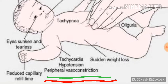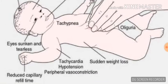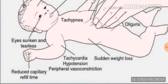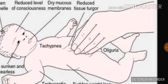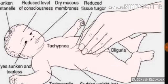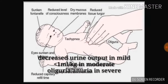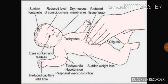If the weight of the child is previously known, we can look for weight loss. There is reduced capillary fill time when there is moderate to severe dehydration, and there can be oliguria even in mild dehydration. These are the general features we have to look for in a child with dehydration.